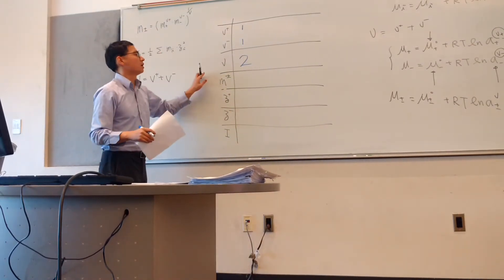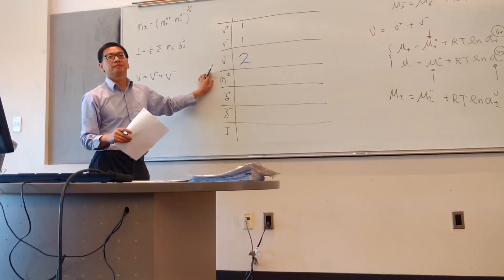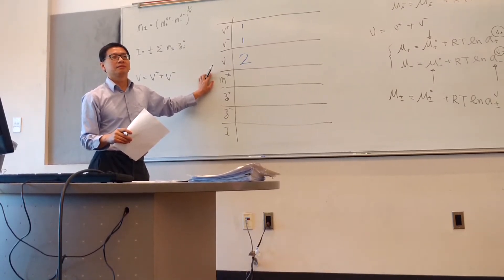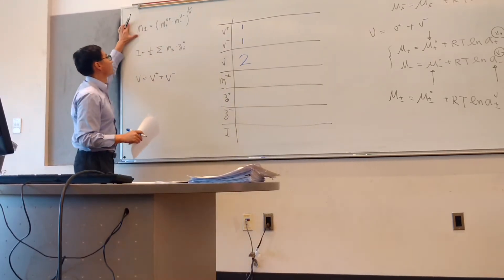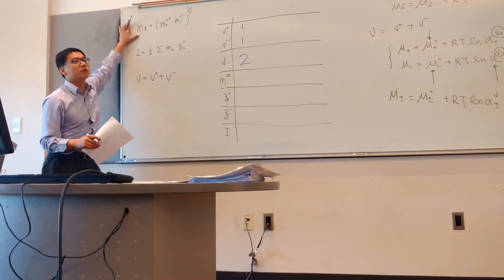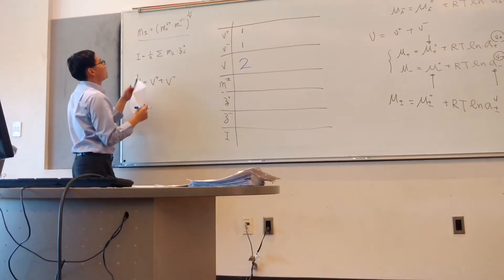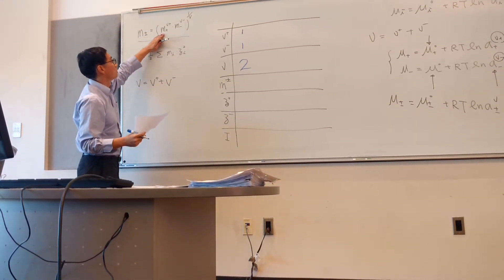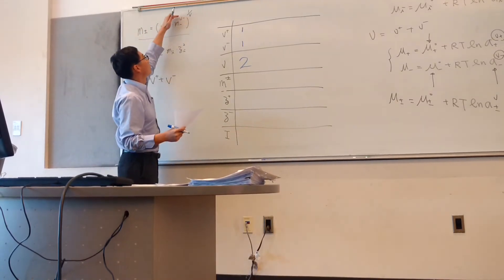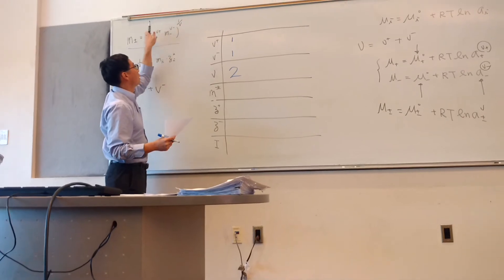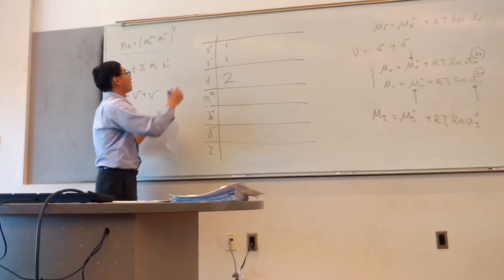Why is your M± what it is? Your M± is calculated through this equation. Basically, it's your M+ raised to the ν+ power times M− raised to the ν− power, and then you take 1 over ν of the whole thing.